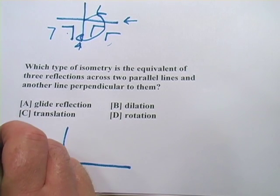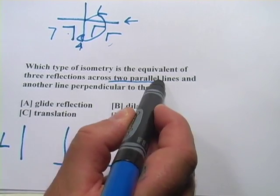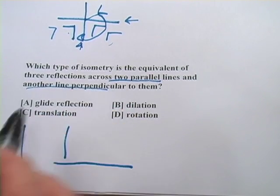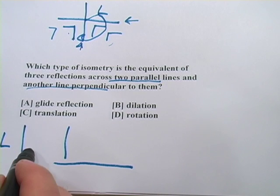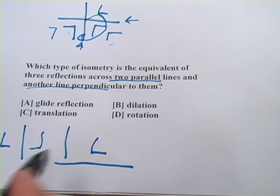And we'll start, I'm going to start with an L again. So we want reflections across two parallel lines and another perpendicular. So first I'm going to reflect across this one. Boom, there we go. Then I'm going to reflect it across this one. Boom, there we go.